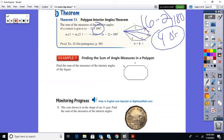Well, I've got one, two, three, four, five, six, seven, eight. And so the sum is going to equal eight minus two times 180.